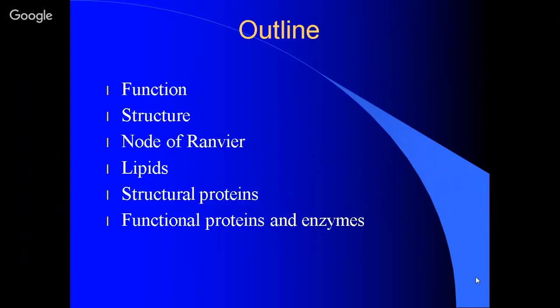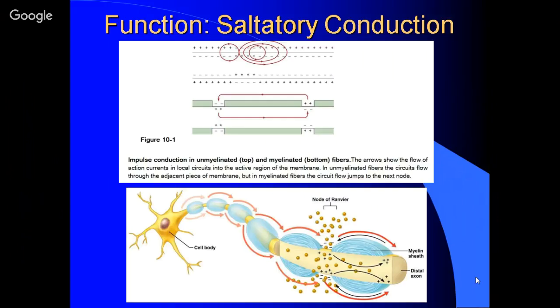Here's our outline. It's the function and structure. We'll look a little bit at the node of Ranvier. We'll look at the composition.